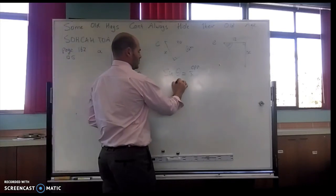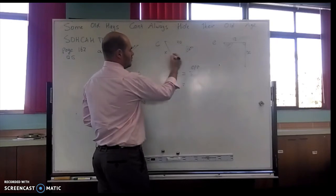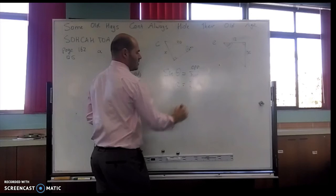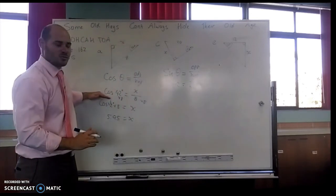So again, I'm going to substitute in what I know. So sine of 42, my angle. The opposite, I'm not sure what that is, that's still x. My hypotenuse is 20. Same process as before.